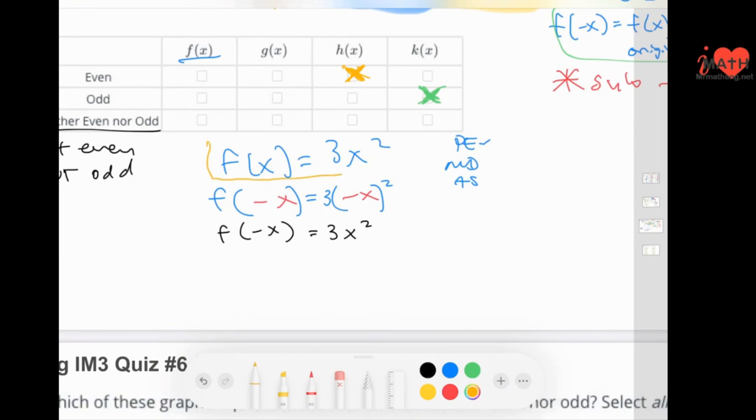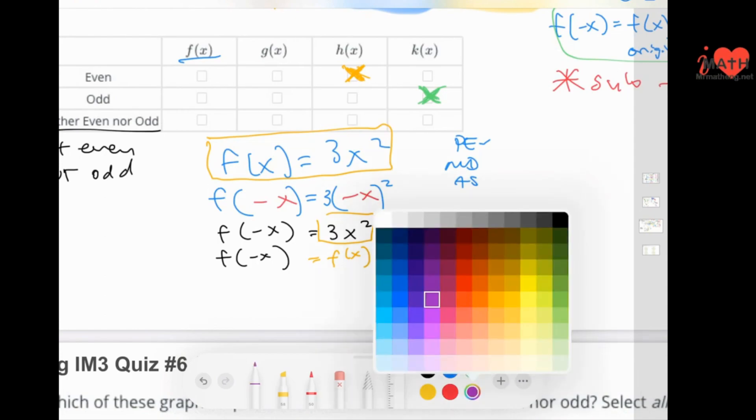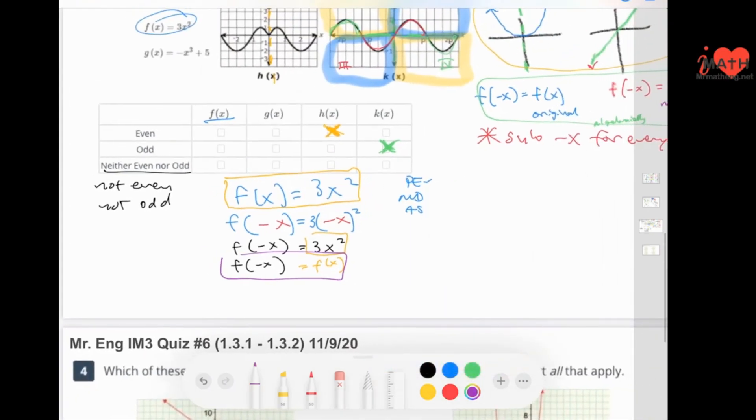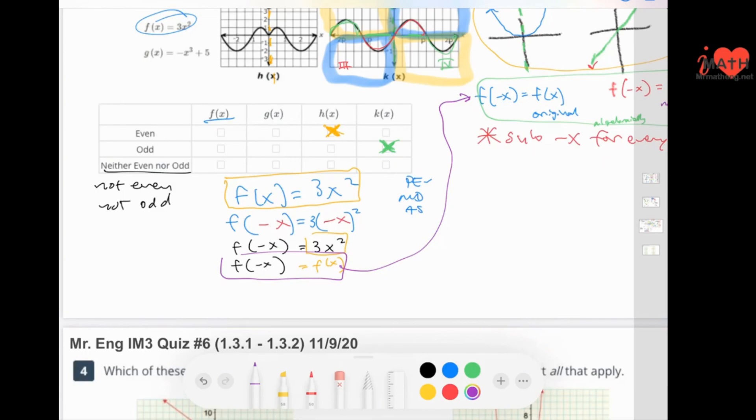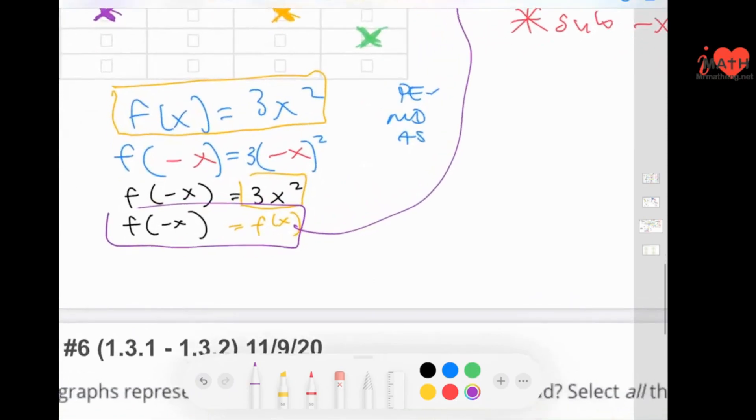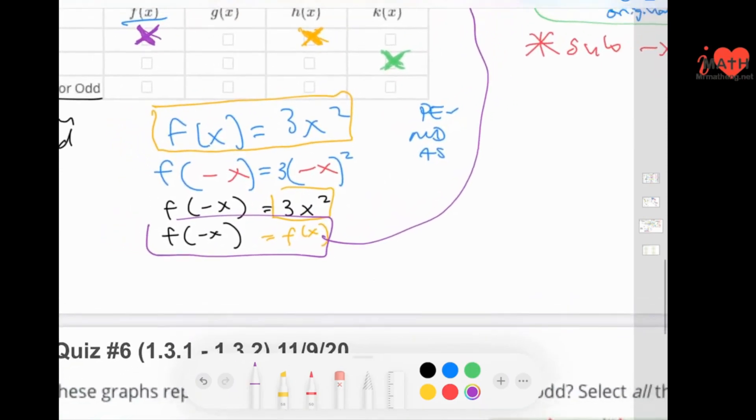Now, every time you see F of X, you can write 3X squared. I see 3X squared, I can write F of X. What does this mean? When I substitute in negative X, I actually get the original problem. I'm going to color here purple. So this matches which description? That would be an even. So F of X is also an even. That substitution, the last part at the end I did, I'm just kind of showing that it's the original problem.